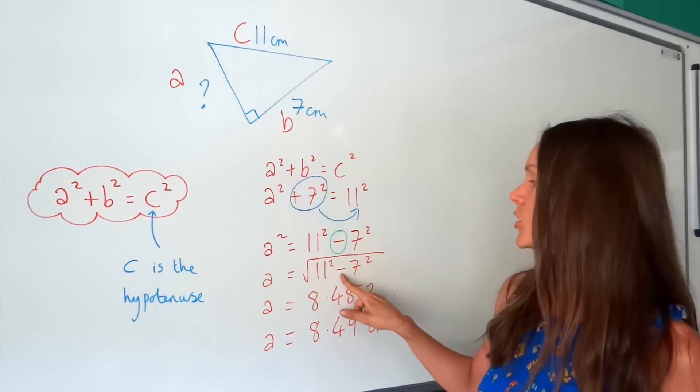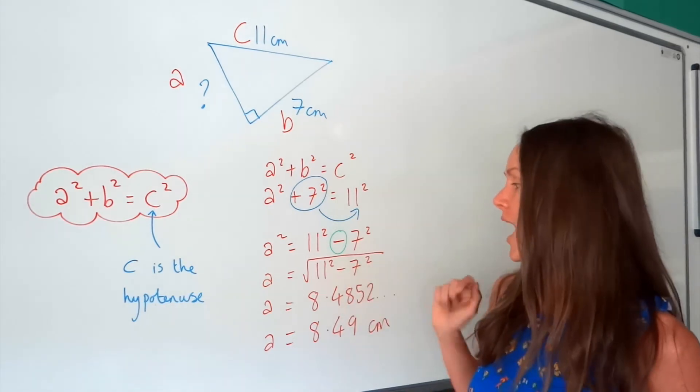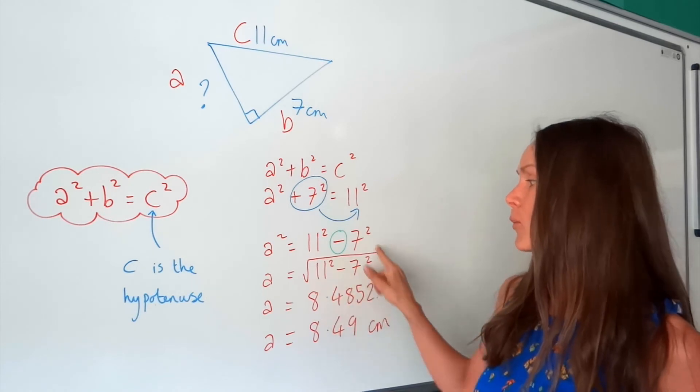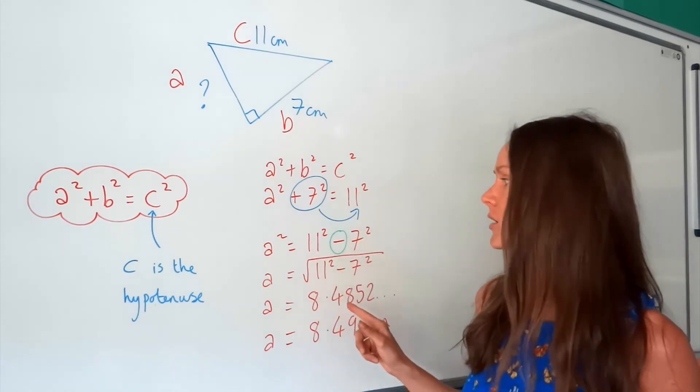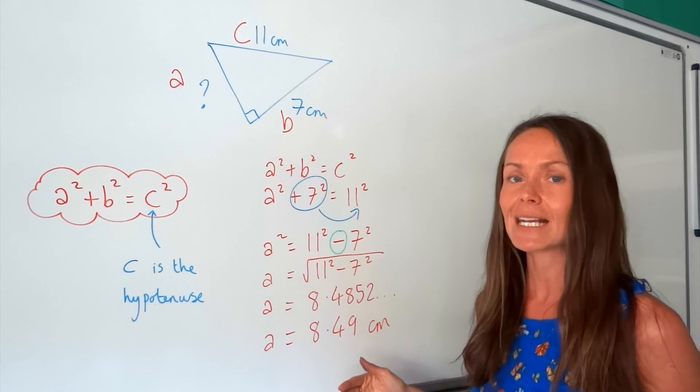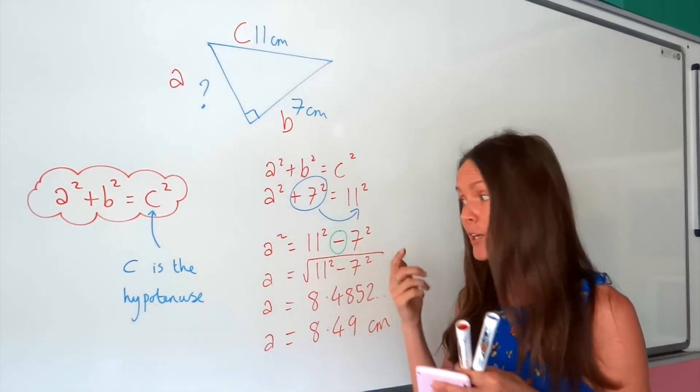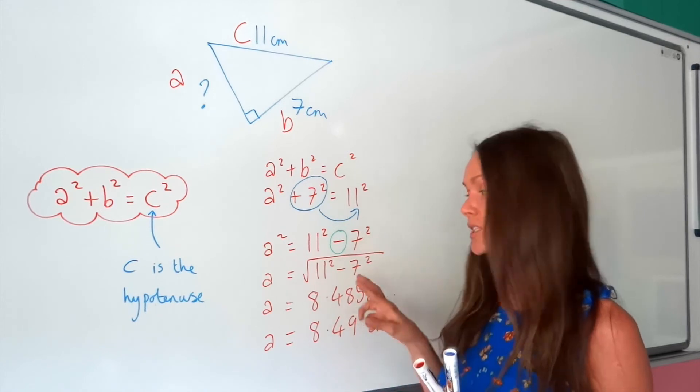And remember, the bigger number will always go first. Otherwise, you'll get an error in the calculator. Okay, but if you show your working out really clearly like that, you shouldn't have any problems figuring out the order and which way to write these.